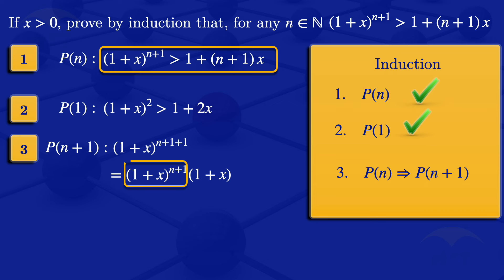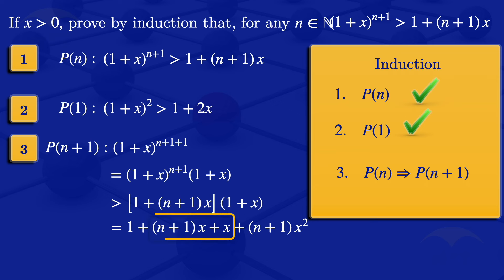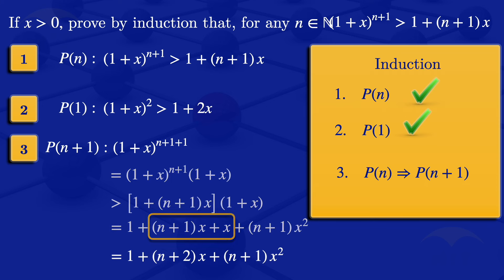Expanding this expression, we get 1 plus n plus 1 multiplied by x plus x plus n plus 1 multiplied by x squared. Looking at the terms n plus 1 multiplied by x plus x, I can factor out x to get n plus 2 multiplied by x. So the expanded form becomes 1 plus n plus 2 multiplied by x plus n plus 1 multiplied by x squared.